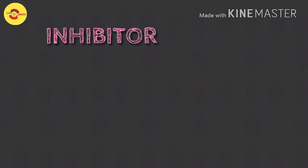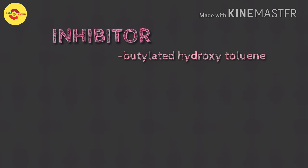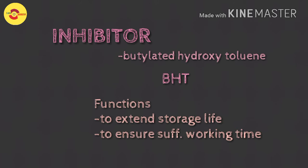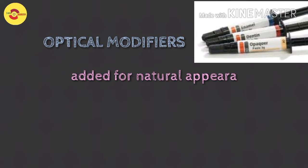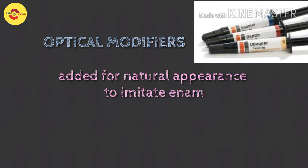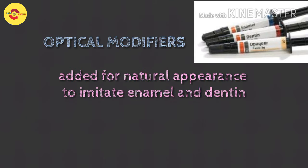The inhibitor commonly added is butylated hydroxytoluene (BHT). Inhibitors have two functions: to extend the resin's storage life and to ensure sufficient working time. Optical modifiers are usually added for natural appearance, to imitate enamel and dentin shading, which is achieved by adding various pigments.